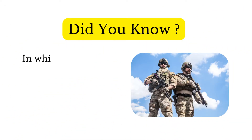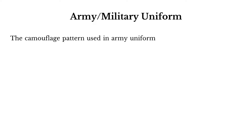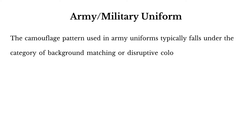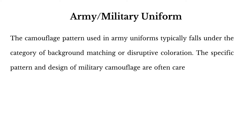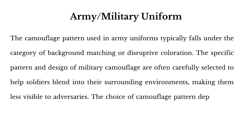Did you know? In which type of camouflage pattern does the army uniform come under? The camouflage pattern used in army uniforms typically falls under the category of background matching or disruptive coloration. The specific pattern and design of military camouflage are carefully selected to help soldiers blend into their surrounding environments, making them less visible to adversaries. The choice of camouflage pattern depends on the terrain where military operations are expected to take place.